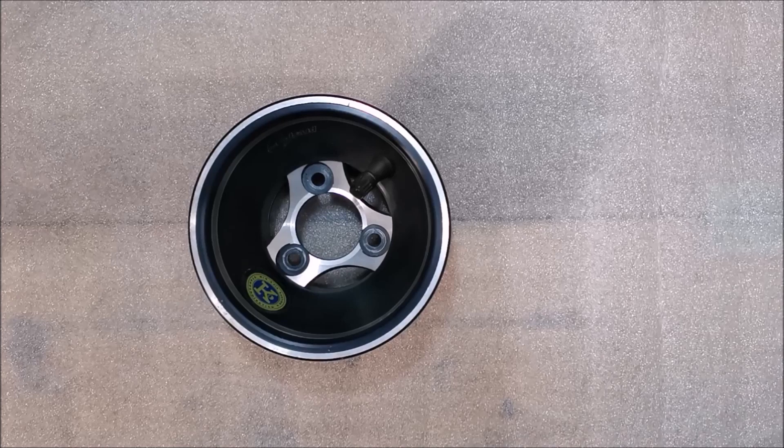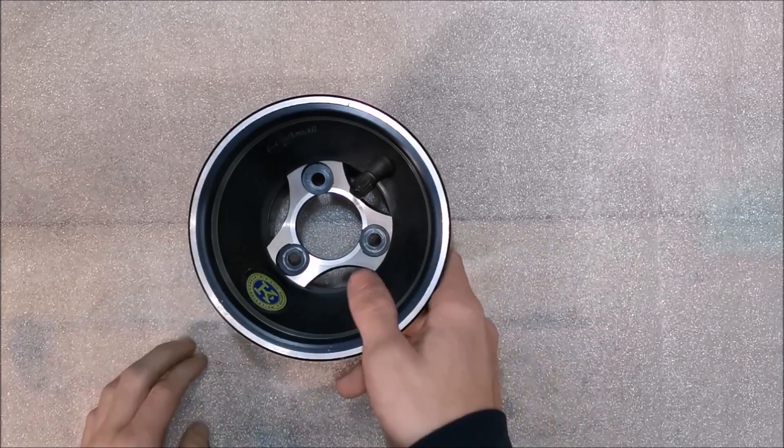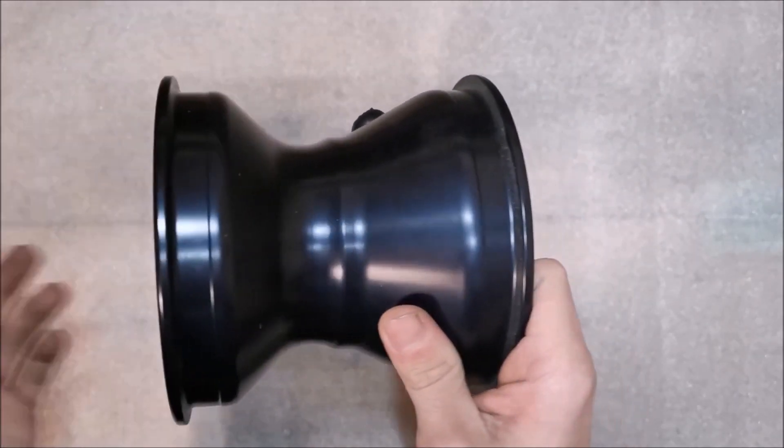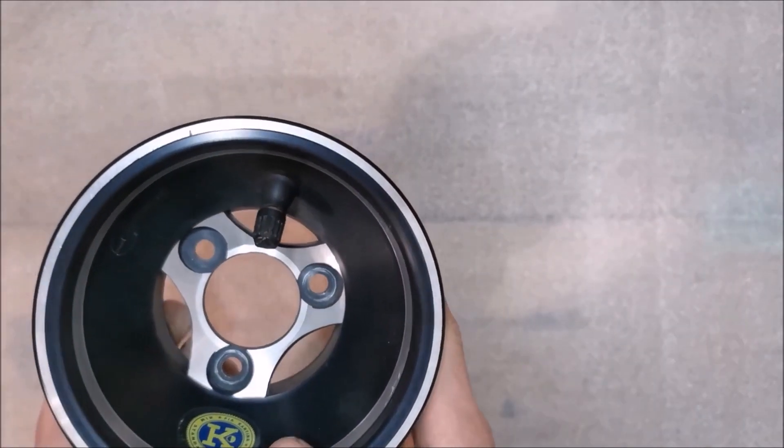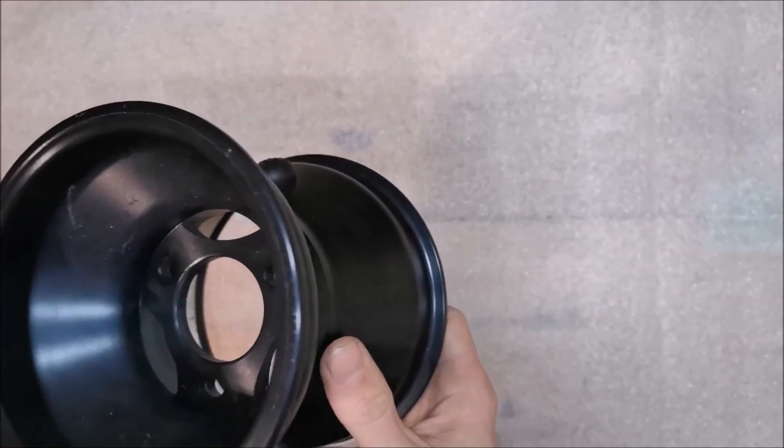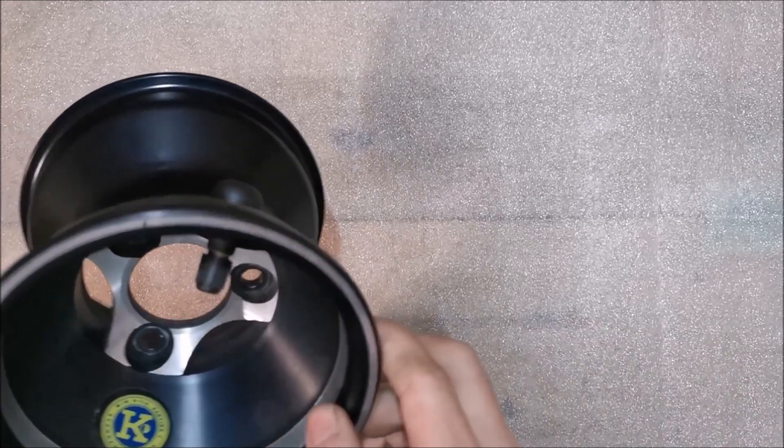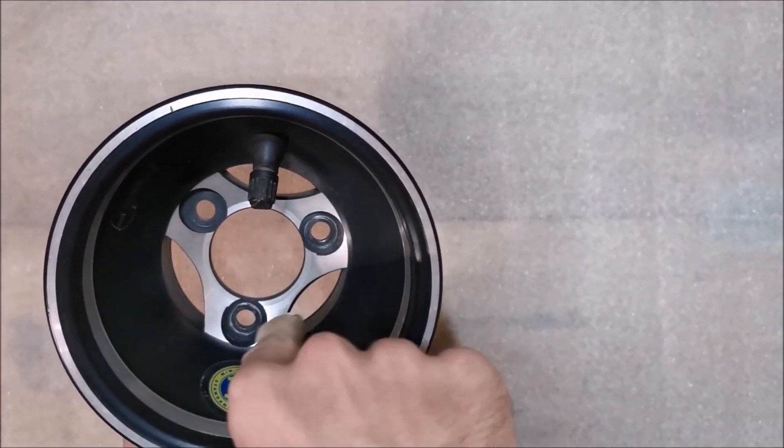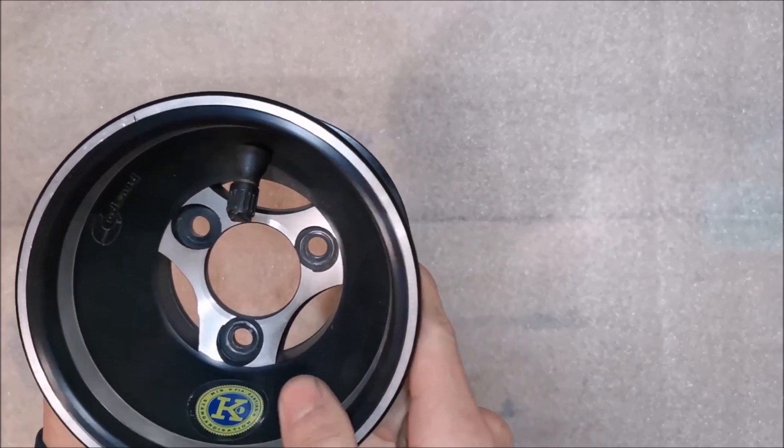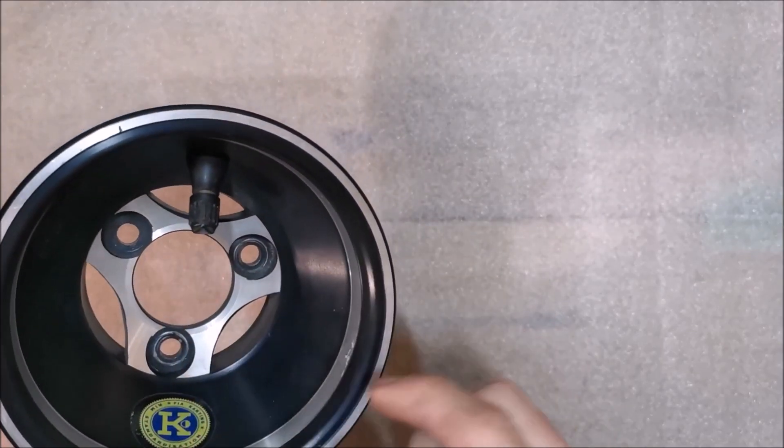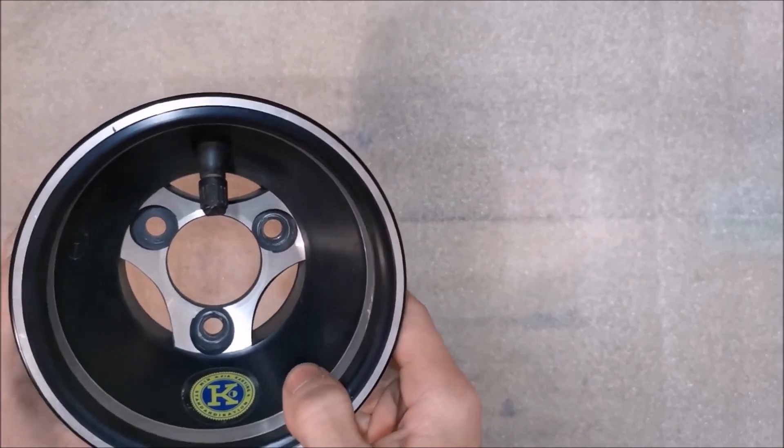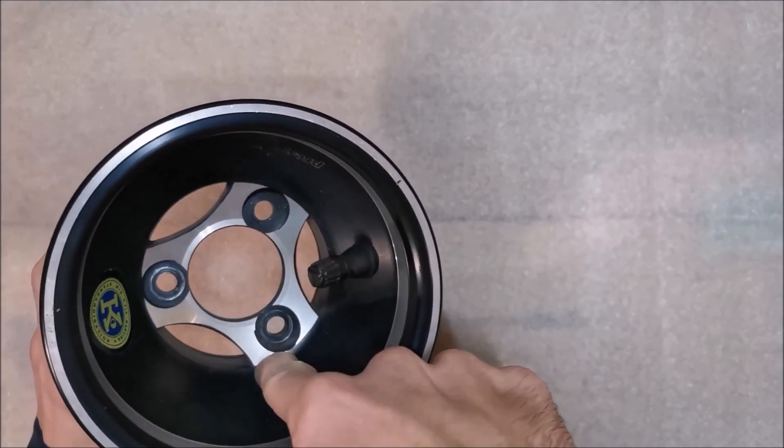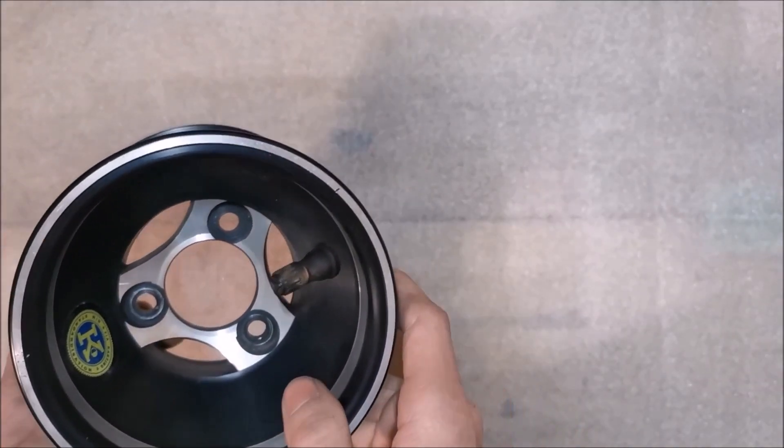So with that let's start. First I want to show you the rim which is currently used on go-karts and all the difficult parts which makes it quite hard to make out of carbon fiber. This rim has here this center boring which is very precise because on the go-kart this is where the rim gets centered so that it is balanced. These three holes are just to secure the rim on the wheel hub.